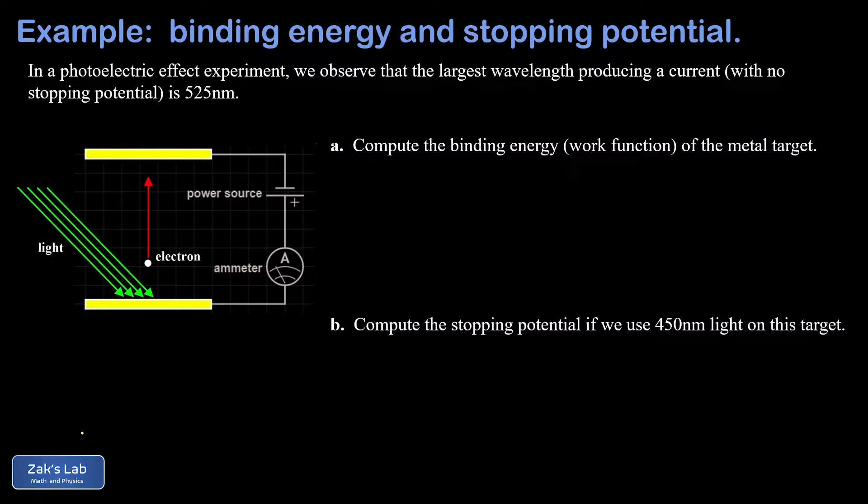In this video we're looking at a photoelectric effect experiment. So we have light rays coming in from the left. Those strike a metal target. If they have enough energy to bump electrons off that metal target, the electrons can travel across this gap to the opposite plate and a current will be registered by an ammeter in the circuit.